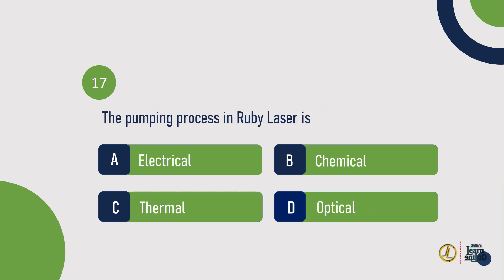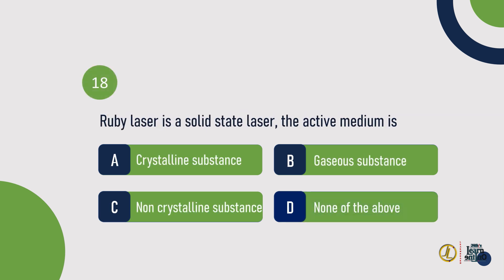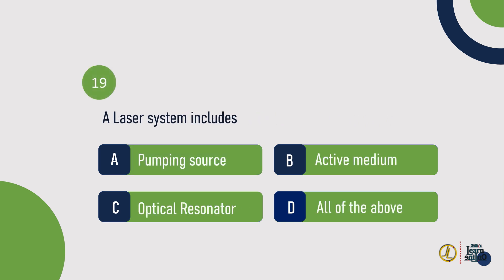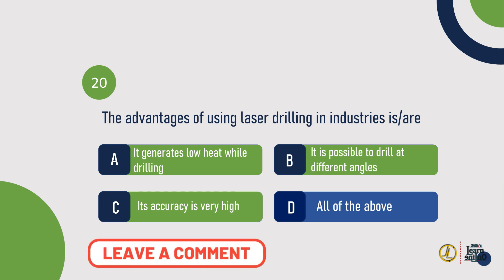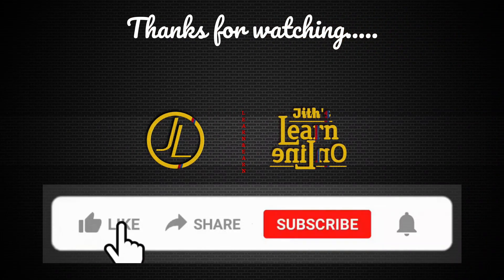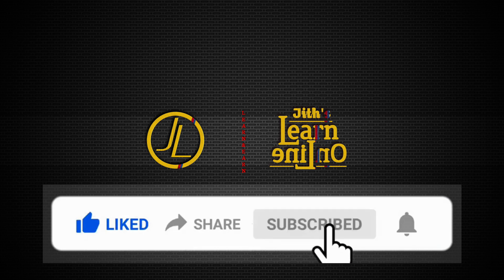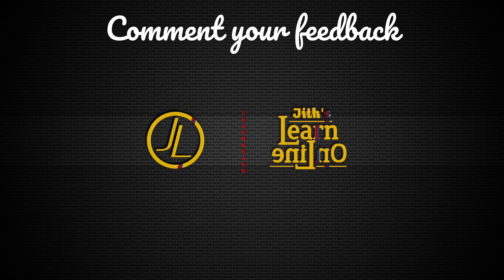Question 17: The pumping process in Ruby laser is — optical. Question 18: Ruby laser is a solid state laser; the active medium is a crystalline substance. Question 19: A laser system includes — all of the above. Question 20: The advantages of using laser drilling in industries are — all of the above.